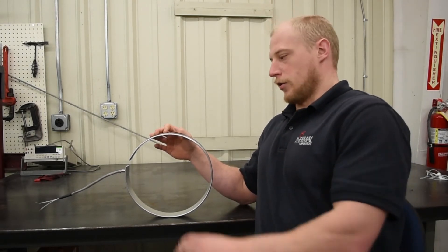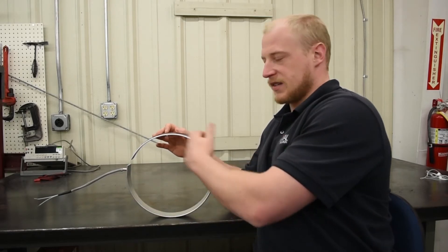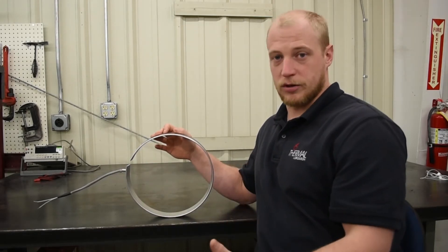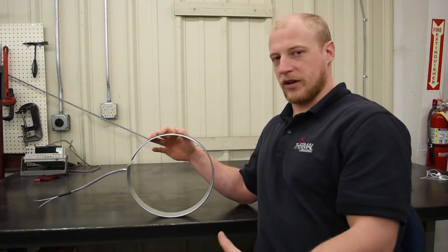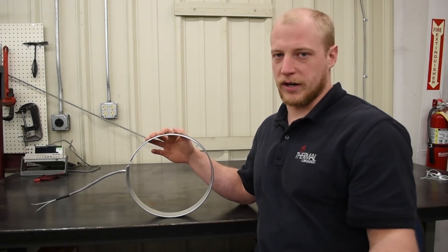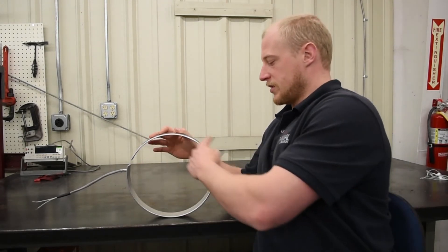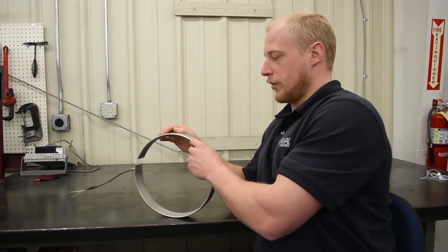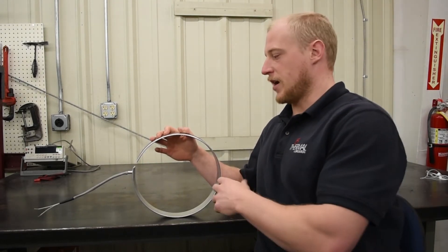So we've got this heater, we know the size, we know what temperature we're running at. We can look at one of those graphs and say it's going to lose three watts per square inch to the atmosphere. Then we calculate the surface area of our heater, multiply that by three, and that's the amount of wattage that's going to be lost to space.